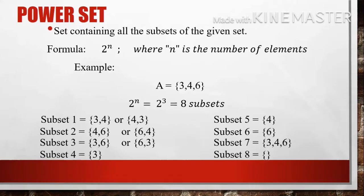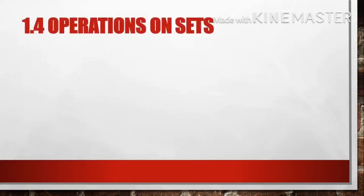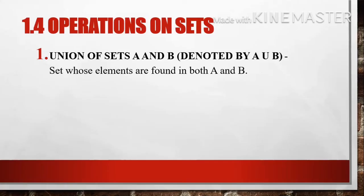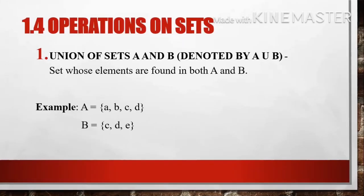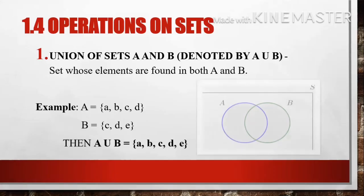Let's now have operations on sets. The first is the union of sets A and B, denoted by A ∪ B — a set whose elements are found in both A and B. Example: set A whose elements are A, B, C, D, and set B whose elements are C, D, and E. In union of sets, we combine the elements of both sets, so A ∪ B = { A, B, C, D, E }.